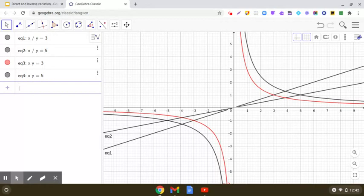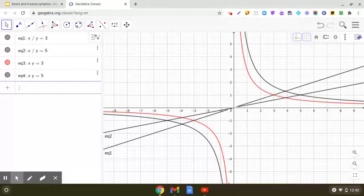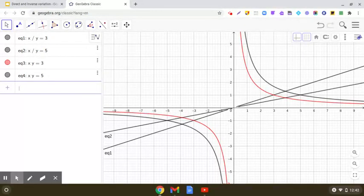When it is a case of direct variation, you get a straight line passing through the origin. And when it is a case of indirect variation, you get a hyperbola. I hope this concept is clear to all of you.